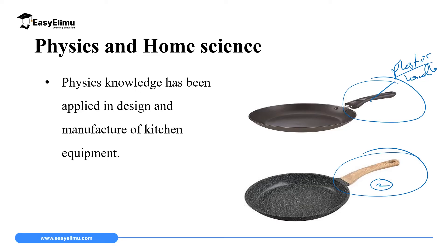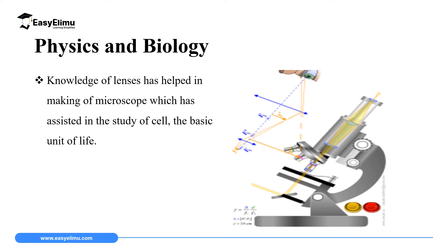Physics and biology also have a very wide interrelationship in that biology depends on physics with the idea of lenses to make a microscope — either a light microscope or an electronic microscope — which biology uses to study the cell as the basic unit of life. So physics helps make the microscope, and that instrument helps biologists to study the cell, which is the basic unit of life in living things.